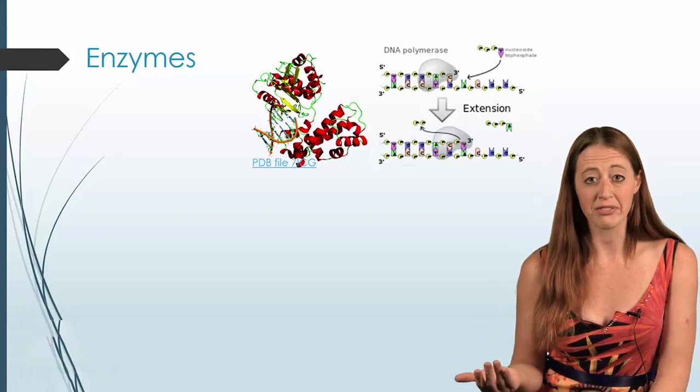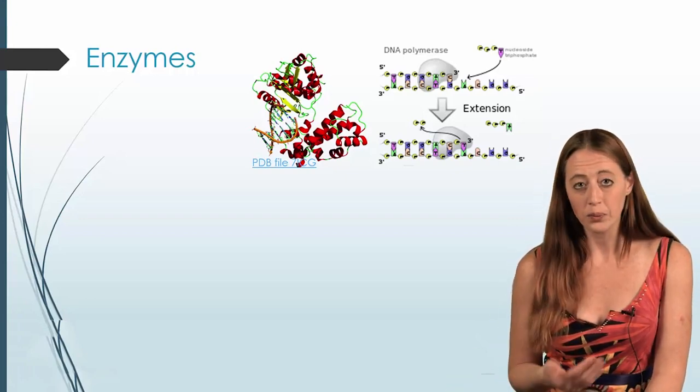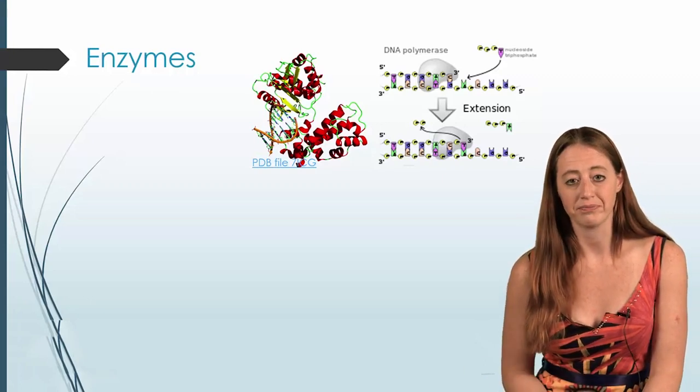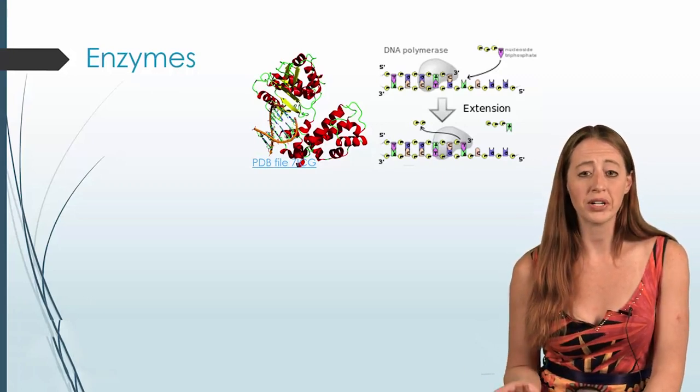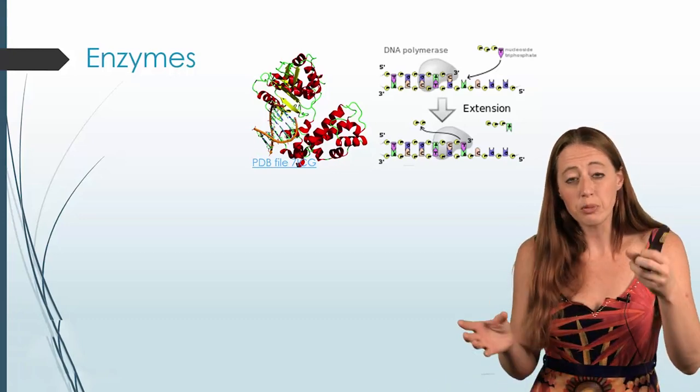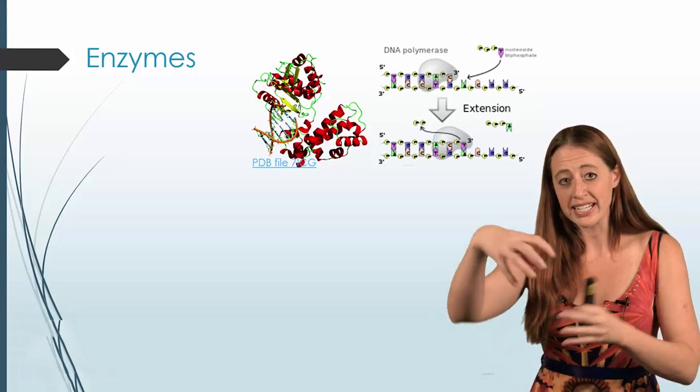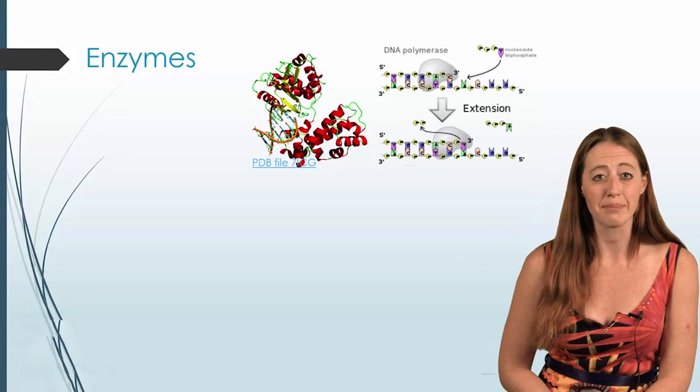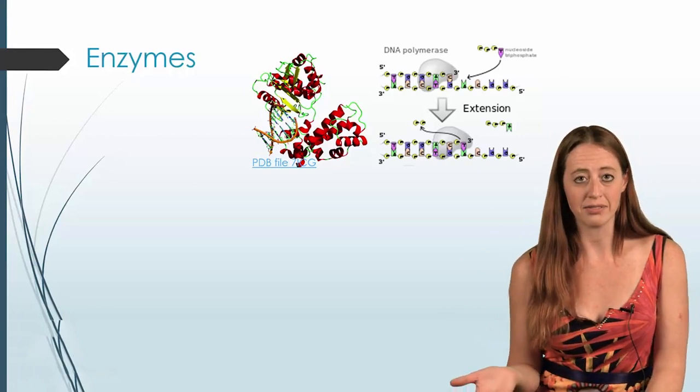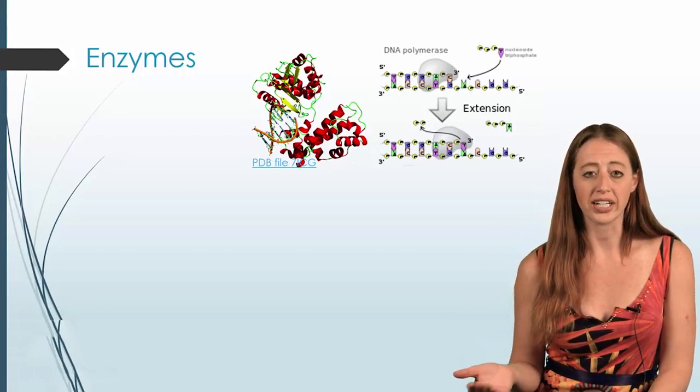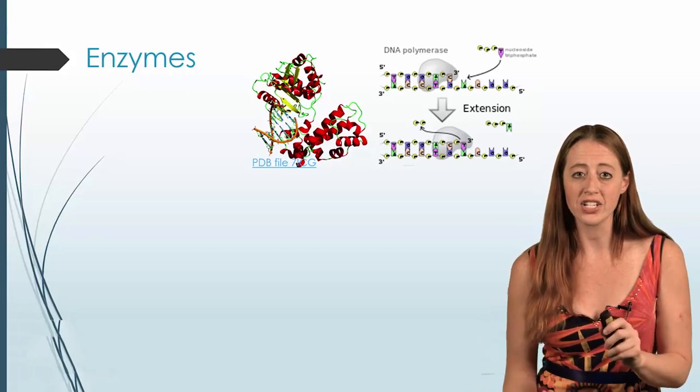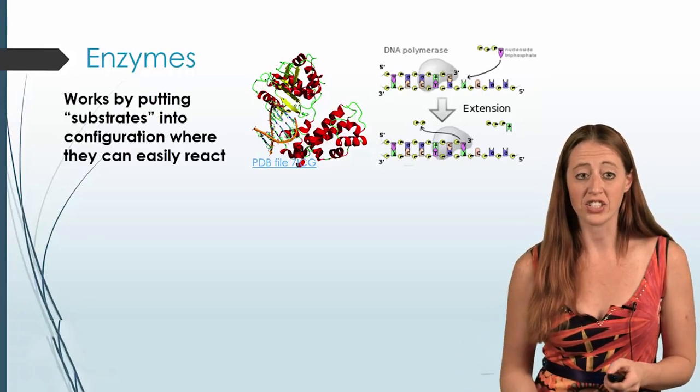If we waited for that to happen spontaneously, we would not be able to survive. So this is a good example of something where you can easily see how, if you put it in exactly the right orientation, it's way more likely to happen. And that's how a lot of, if not all, catalysts work. They put things in the right orientation so that the activation energy is lowered.